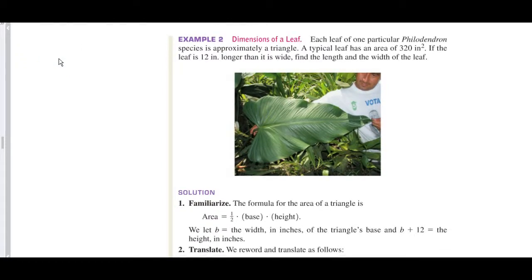Let's take a look at this dimension of a leaf. It's approximately a triangle with this as an area. And if the leaf is 12 inches longer than it's wide, find the length and width of the leaf. Well, again, they're going to give you this and you could read it. But I will do it from scratch if they're not giving all of this. So we have a triangle, I would make a picture.